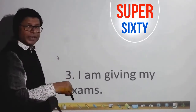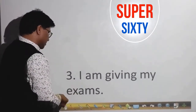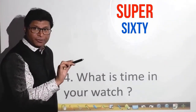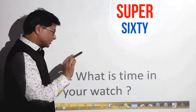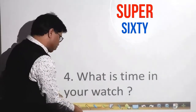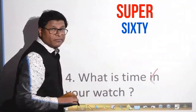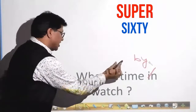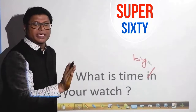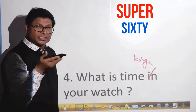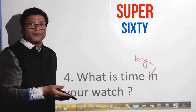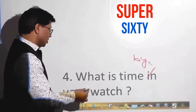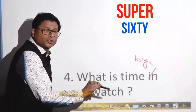The fourth sentence: 'What is time in your watch?' Don't use 'in' here. You must use 'by': 'What is time by your watch?' If you want to be formal, you can say 'please' or ask politely. Say 'What is the time by your watch?' — not 'in your watch.'